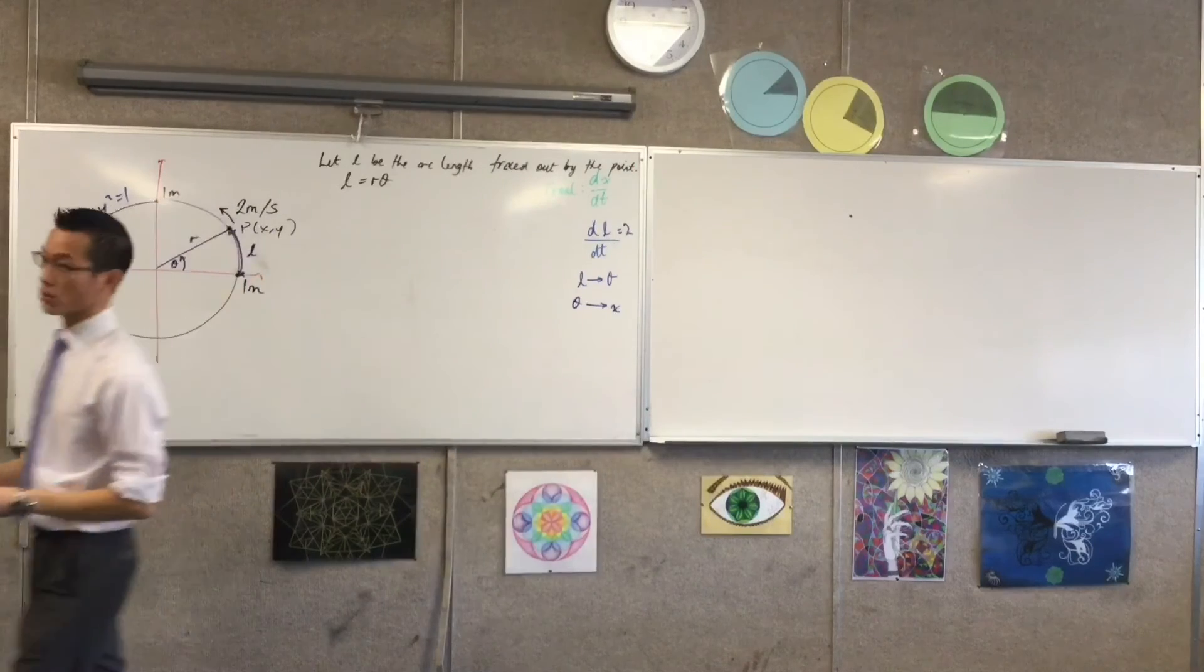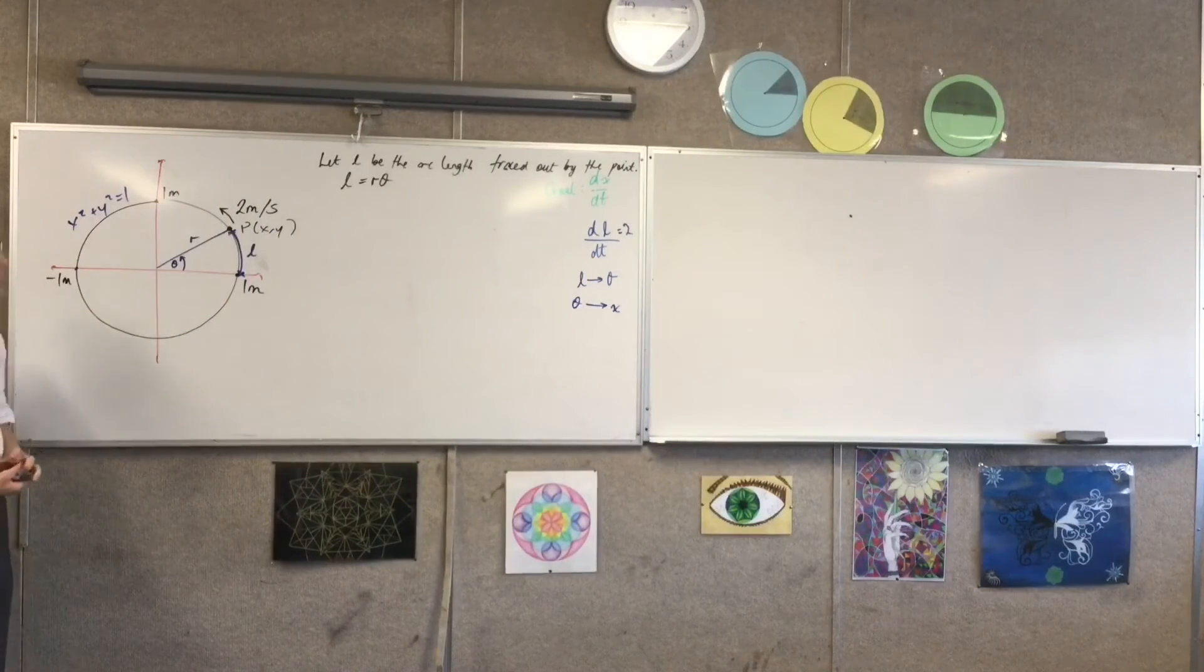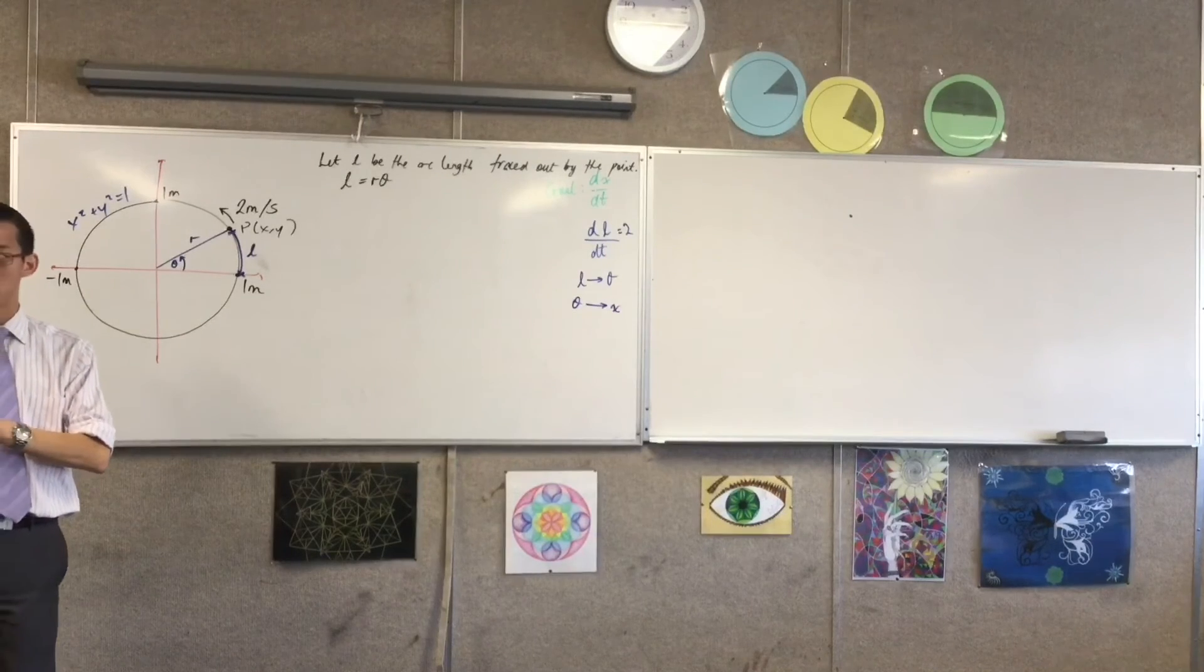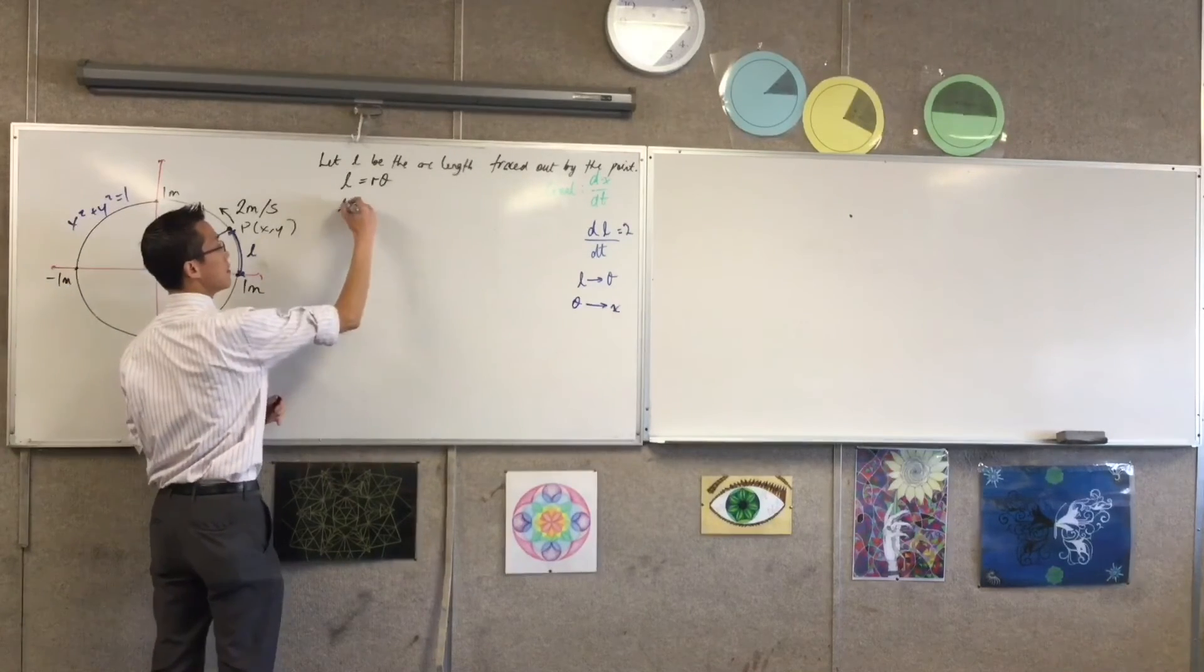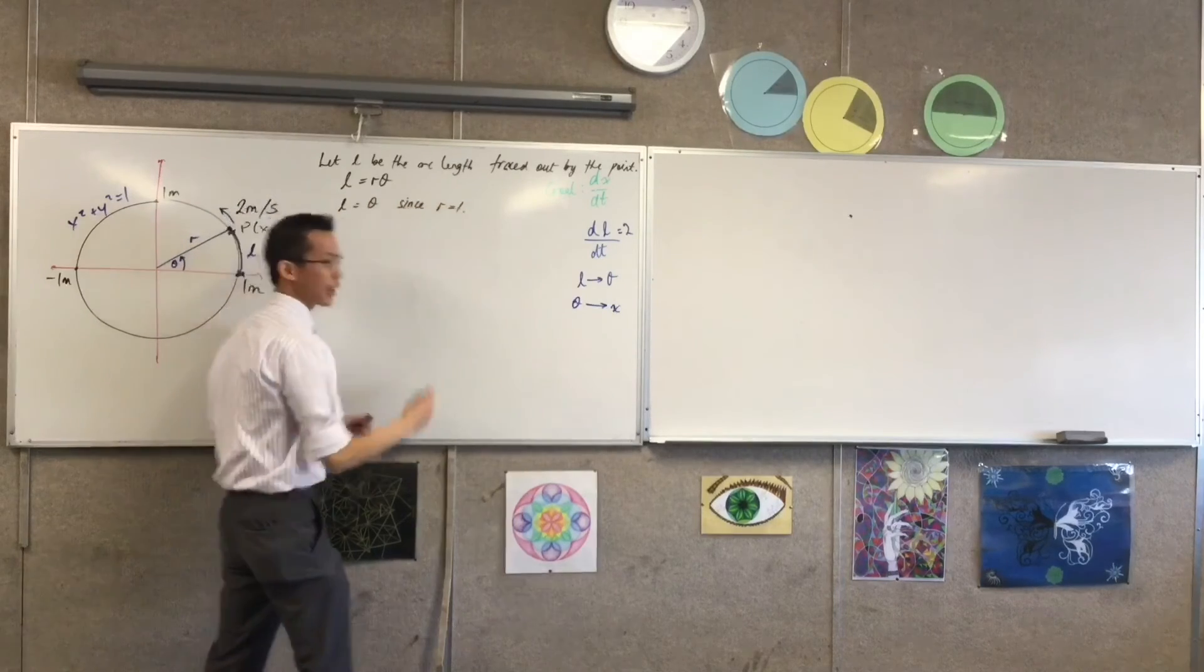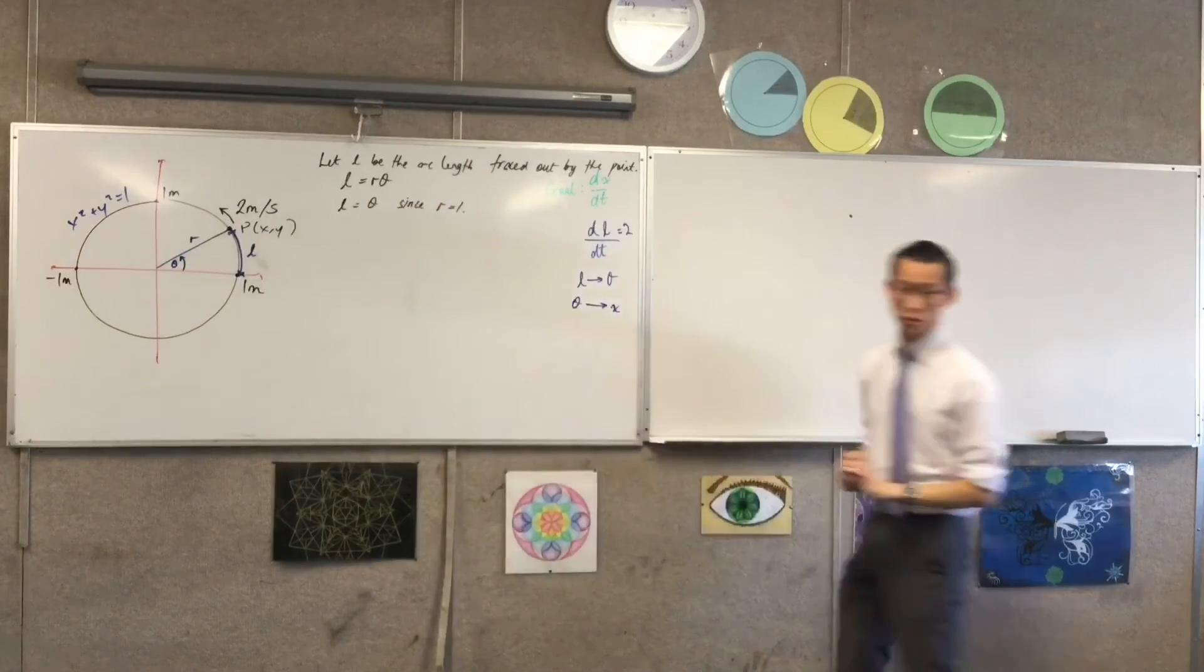This variable, we've introduced it, so we better define it, okay? So, L equals r*theta, but of course, this is the unit circle, so r is equal to one. Okay, cool. That's good.